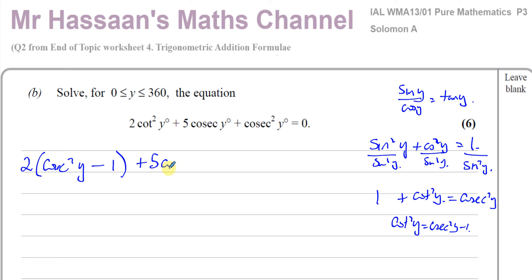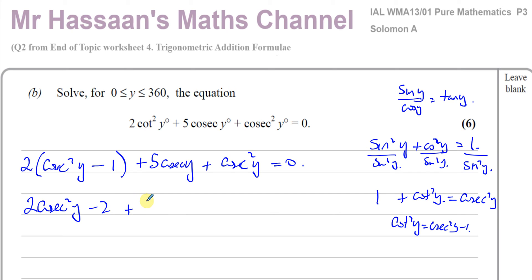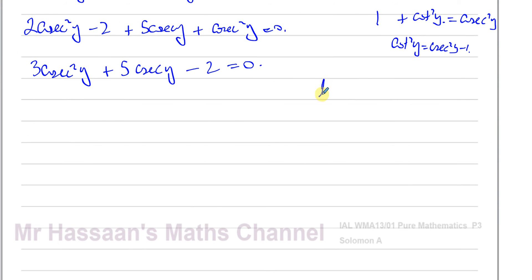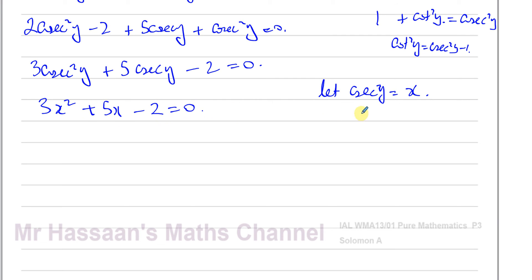Substituting, I have 2(cosec²y − 1) + 5 cosec y + cosec²y = 0. Expanding: 2 cosec²y − 2 + 5 cosec y + cosec²y = 0, which gives 3 cosec²y + 5 cosec y − 2 = 0. Now I have a quadratic equation. Let cosec y = x, so this becomes 3x² + 5x − 2 = 0.